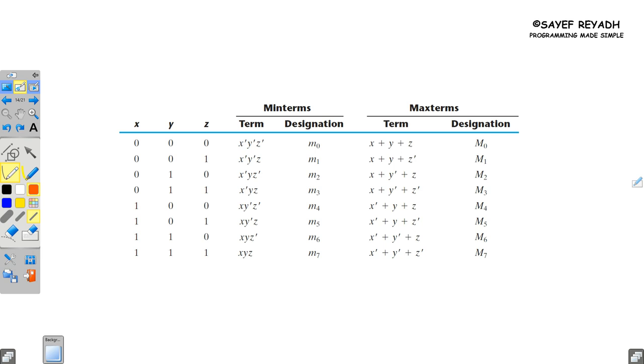For sum of minterms or maxterms, the binary representation - BCD value 0, 1, 2, 3, 4, 5, 6, 7. For 0, the binary is 0, 0, 0, the term is x bar y bar z bar and designation is capital M₀. Similarly, for x y z M₇, we get x bar y bar z bar, all denoted with capital letter M₇.